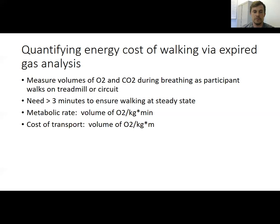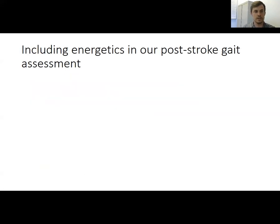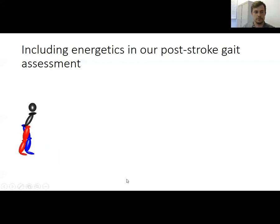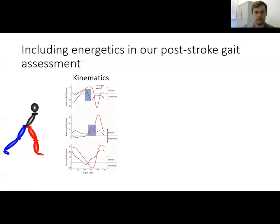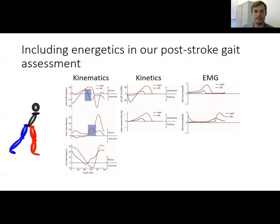We calculate the cost of transport as the volume of oxygen normalized to body mass and also the distance traveled. We can also calculate metabolic power, which is a conversion of the volume of oxygen and carbon dioxide to approximate mechanical power, using a simple equation that has been used for over 30 years. Revisiting our patient from the previous two modules — the left leg walks less well than the right leg — they show changes in their kinematics, kinetics, and electromyography or EMG patterns.